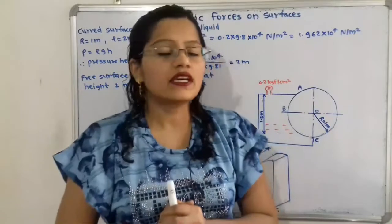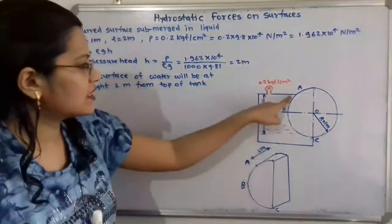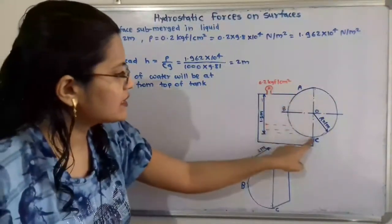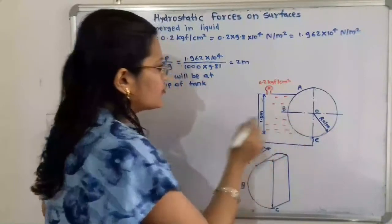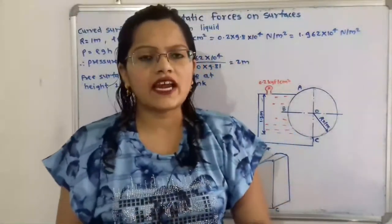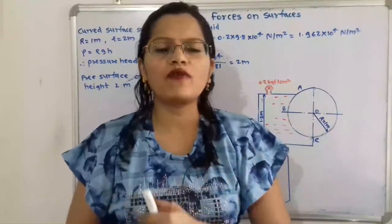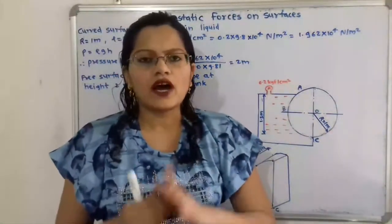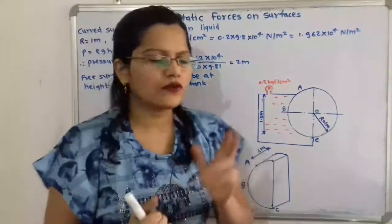Now let us first understand the given diagram. This is the tank — the top of the tank starts from point A, and the curve ABC is in contact with water. This tank is full of water. The pressure on this tank is given as 0.2 kgf per centimeter square. We need to convert this to the standard unit Newton per meter square. 1 kgf is equal to 9.8 Newton, so we multiply 0.2 by 9.8.